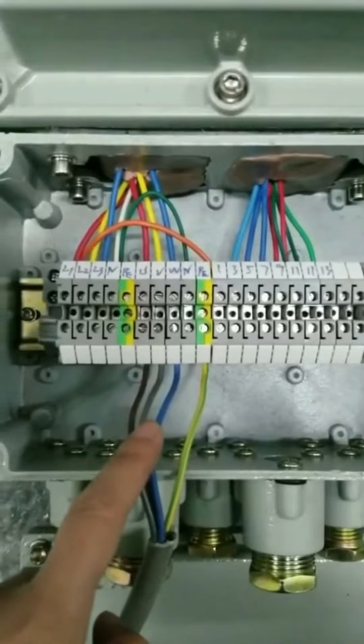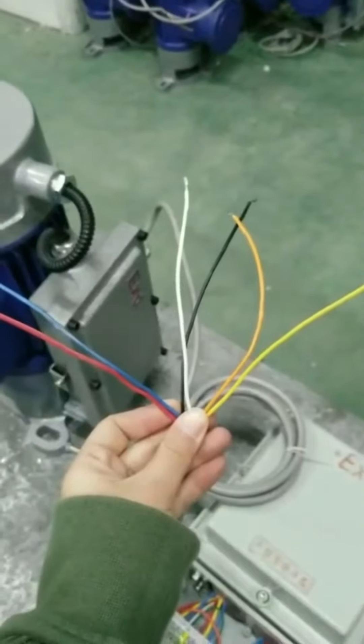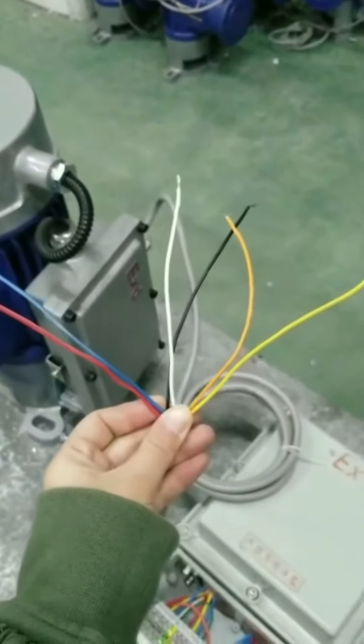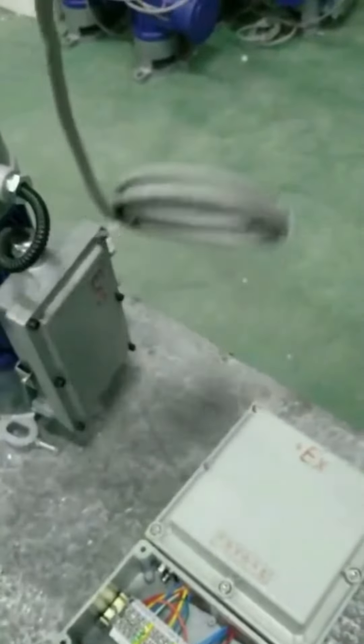Two-color wires should be connected to PE. Third, connect the limit and brake wires with the control box.